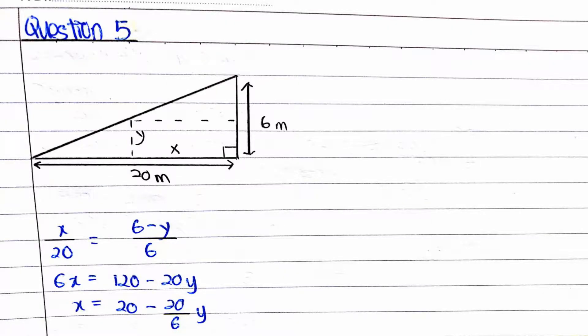To solve this problem, first we have to draw a triangle inside 6m and 20m respectively. Then we draw a rectangle inside the triangle with size x and y.